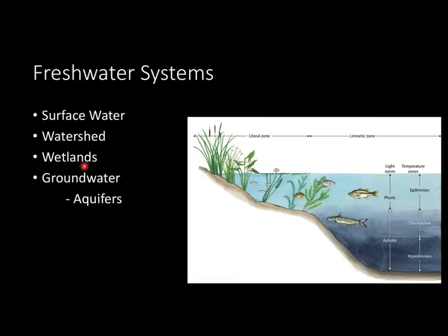Now let's go over the key term wetlands. A wetland is something very important to environmental science. Basically, a wetland is an area that has soil saturated with a shallow pool of standing water and a lot of vegetation. What a wetland does and why it's beneficial is it slows runoff, reduces flooding, recharges aquifers, and even filters pollutants, which we'll get into a little later in this chapter.